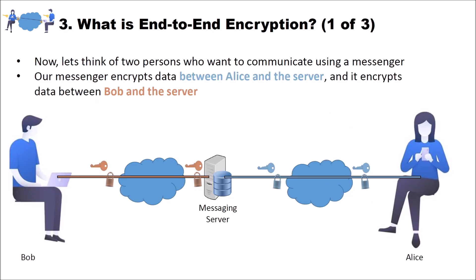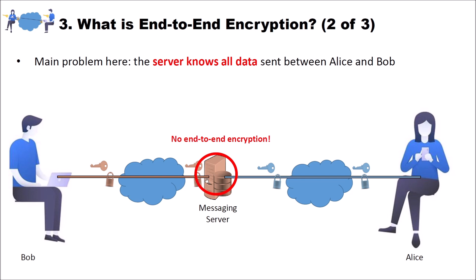Now we go a bit further to end-to-end encryption and what this actually means. Let's think of two persons who want to communicate using a messenger application. In our model, we have a messaging server in the middle between Alice and Bob, and both are connected to the server. The communication is encrypted between Alice and the server, and the data is encrypted between Bob and the server — we still have Transport Layer Security here. But here is the problem and why we don't have end-to-end encryption: the server can still read messages that Bob sends to Alice and Alice sends to Bob.